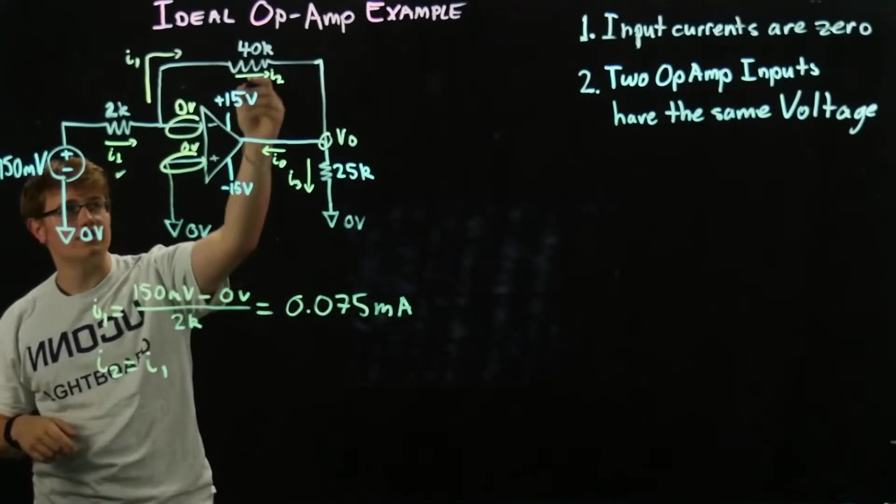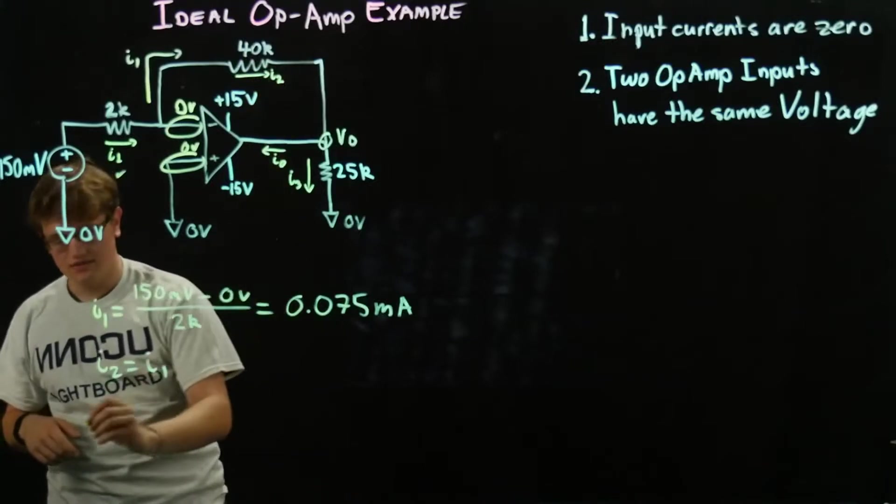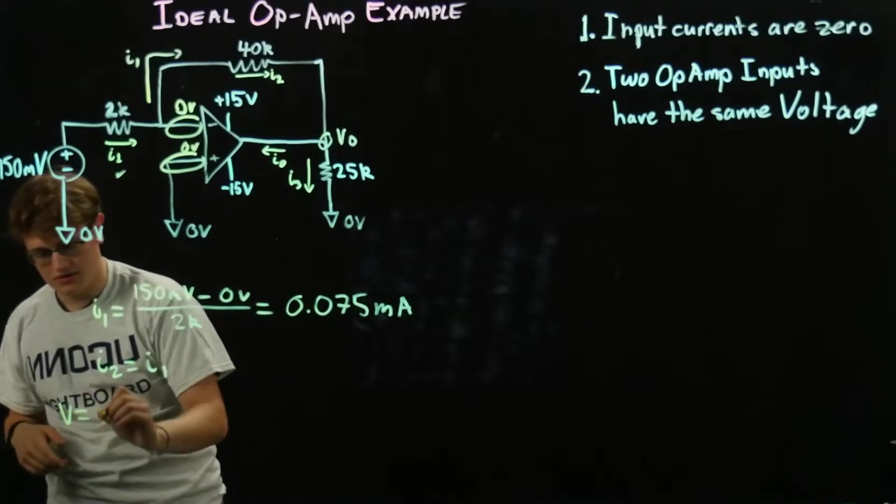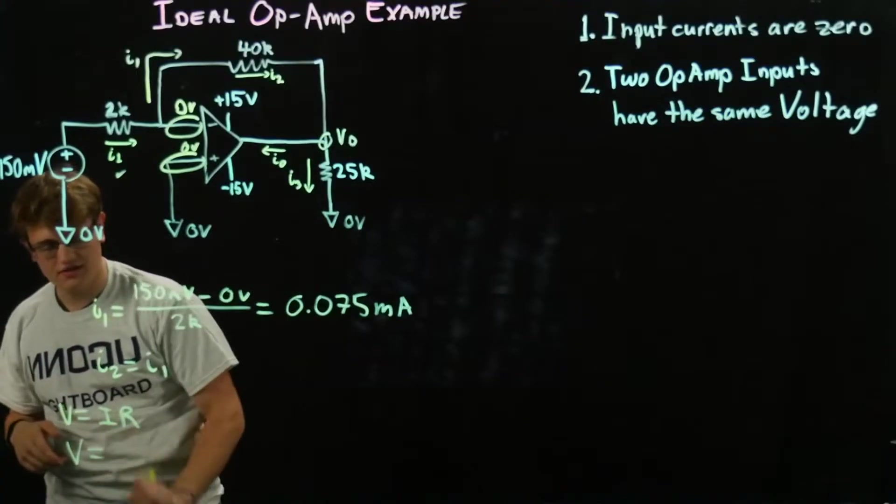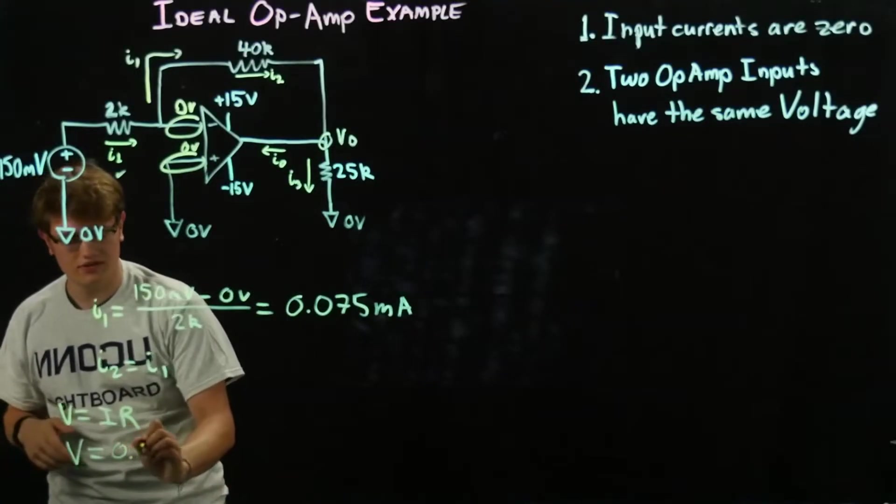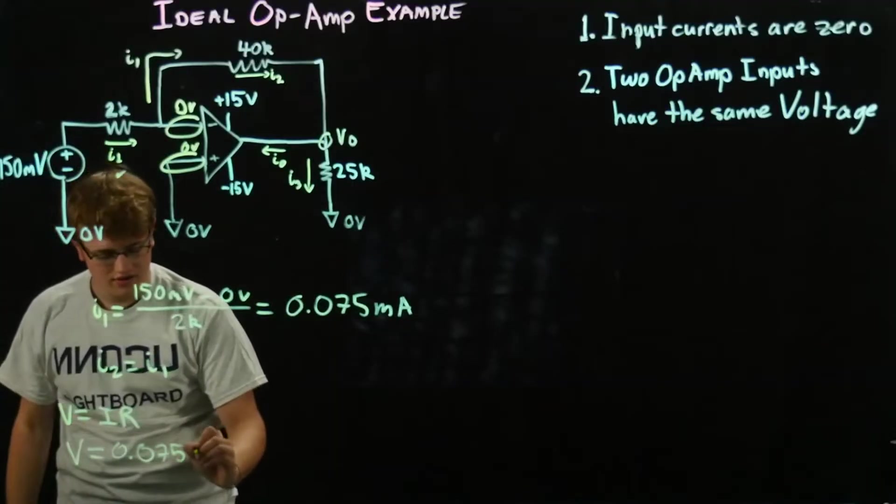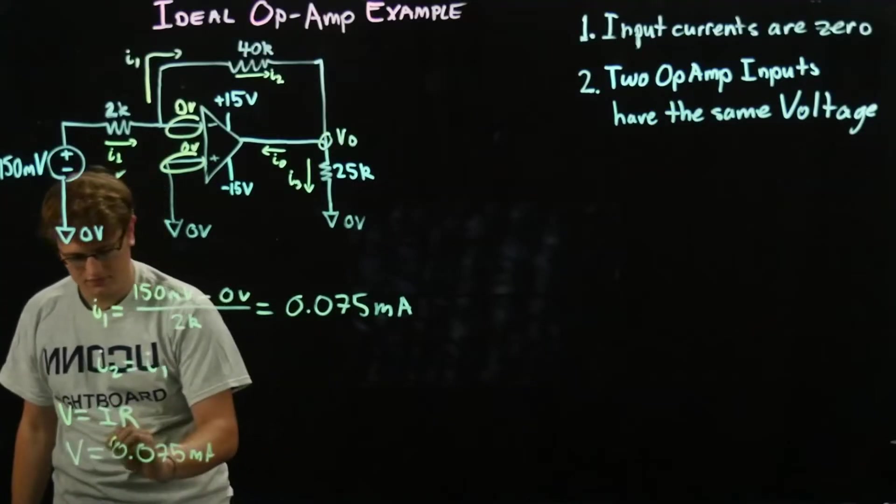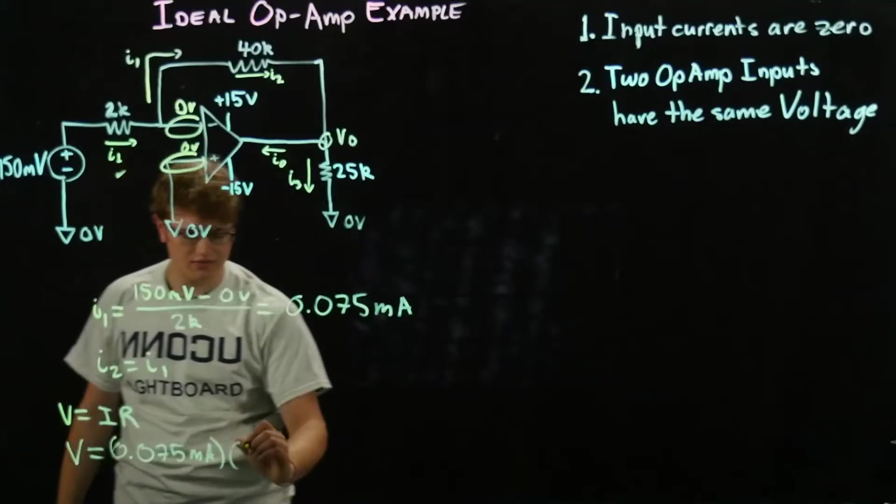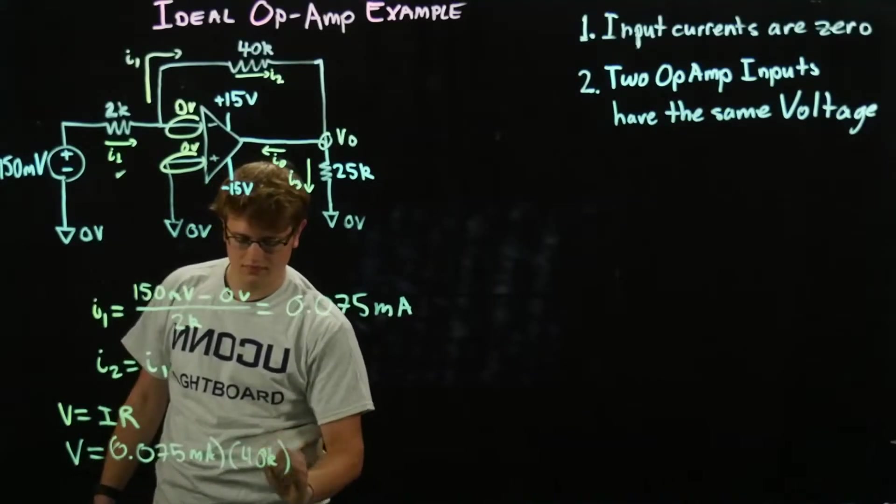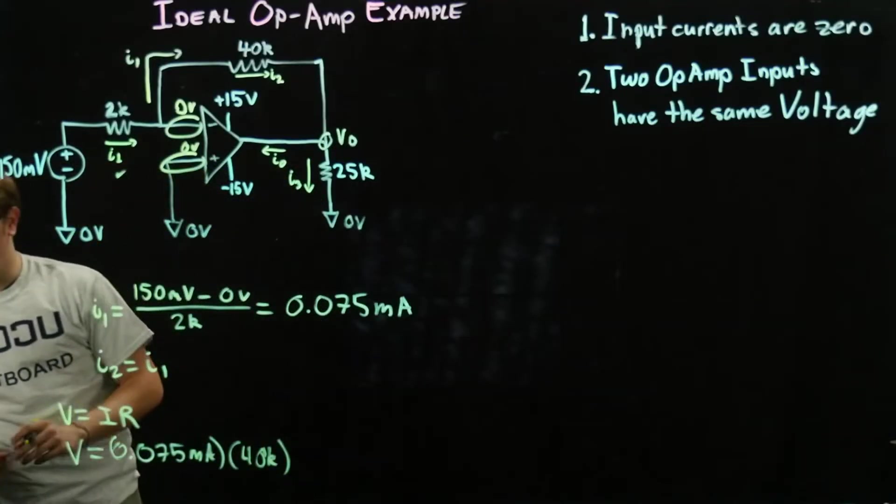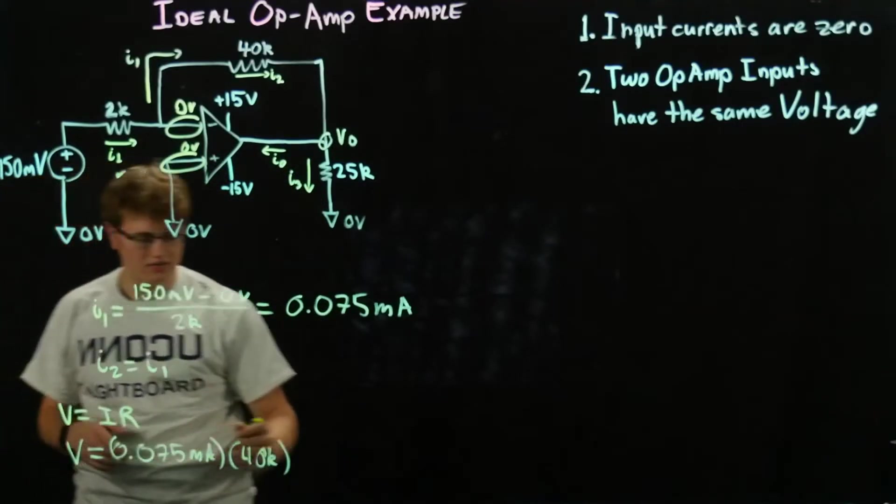So the voltage across this resistor, if we remember our good old V equals IR, V equals 0.075 milliamps, multiplied by that resistance, which is 40k. Now when we multiply those all out, we're going to get 3 volts.